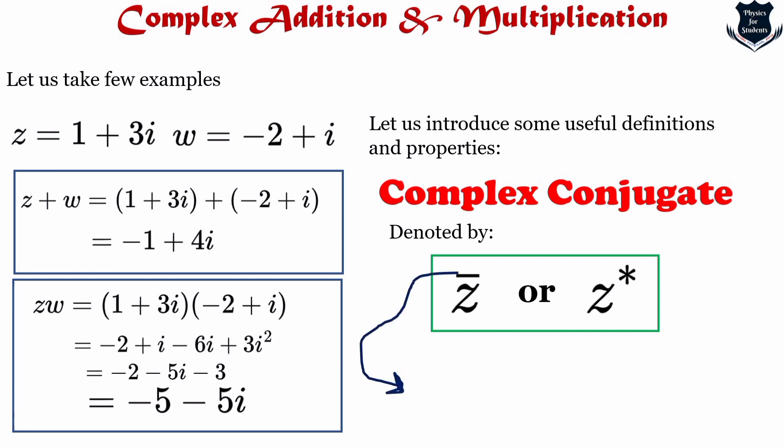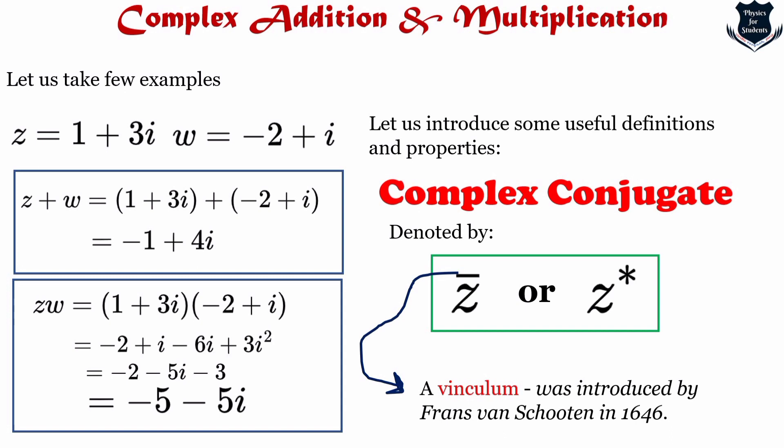This bar is called a vinculum, which comes from a late Latin word. It is a horizontal line used in mathematical notation for different purposes — it may be placed as an overline over a mathematical expression to indicate that the expression is to be grouped together. Historically, vincula were used extensively to group items together, but in modern mathematics the function has almost been replaced by parentheses. The vinculum was first introduced by Franz van Schooten around 1646.